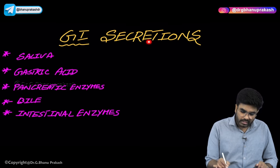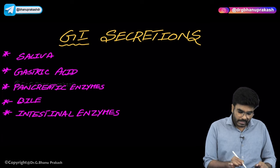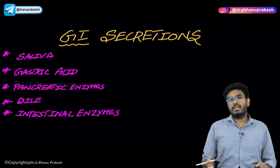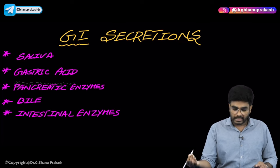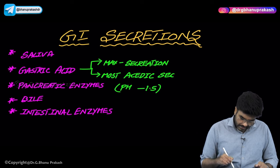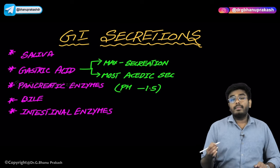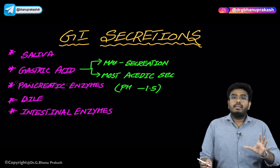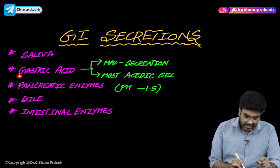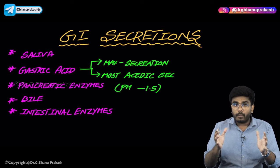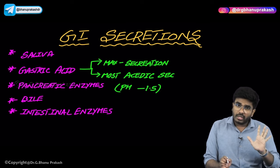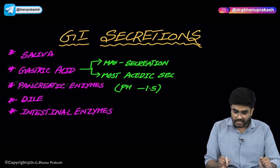Please concentrate. GI secretions include saliva, gastric acid from the stomach, pancreatic enzymes from the pancreas, bile from the liver, and intestinal enzymes or succus entericus from the enterocytes. Out of the 9 liters, the maximum contributor is coming from the stomach. The maximum GI secretion is not saliva, not pancreatic enzymes, not bile, not succus entericus - the maximum quantity of GI secretion comes from the stomach.